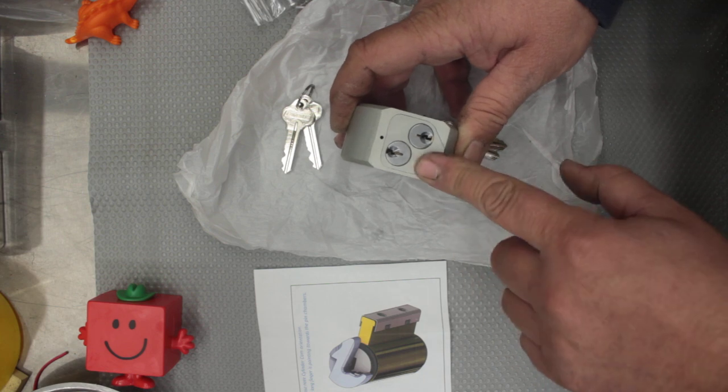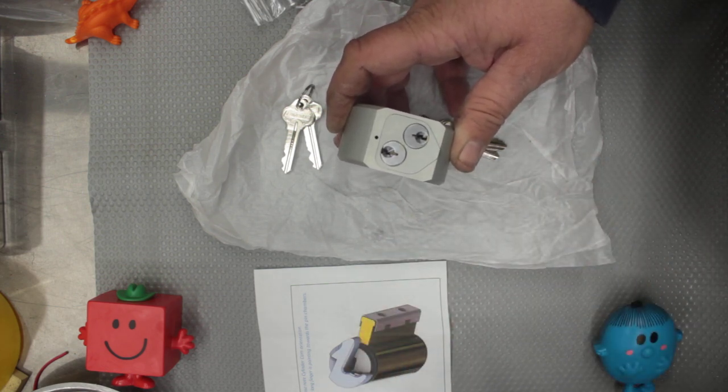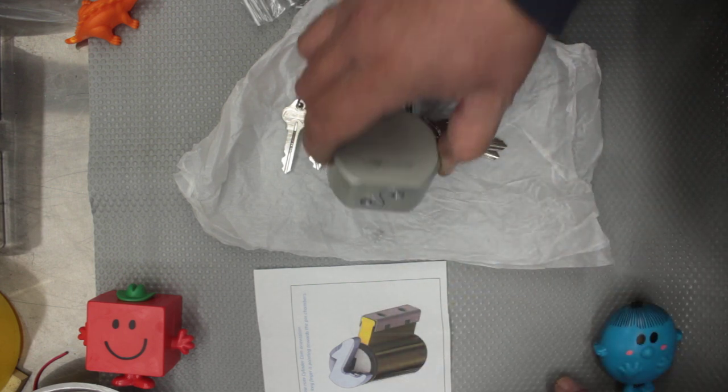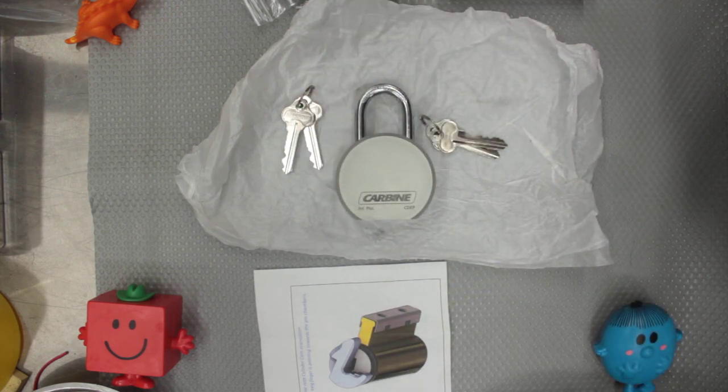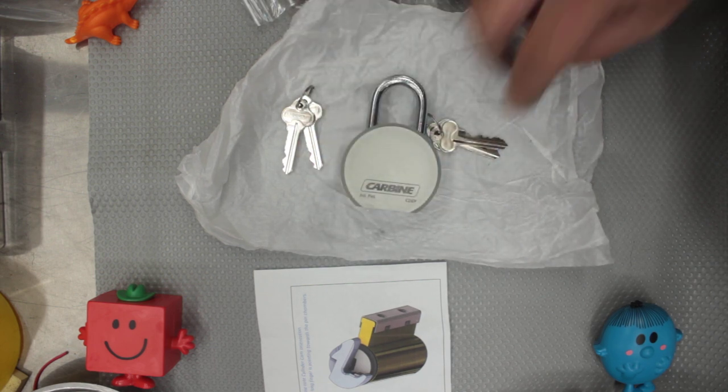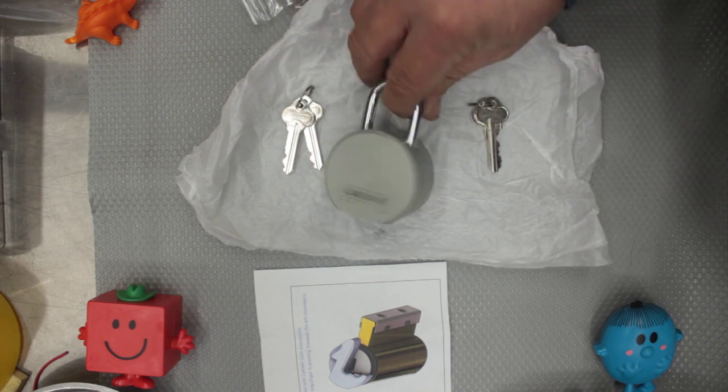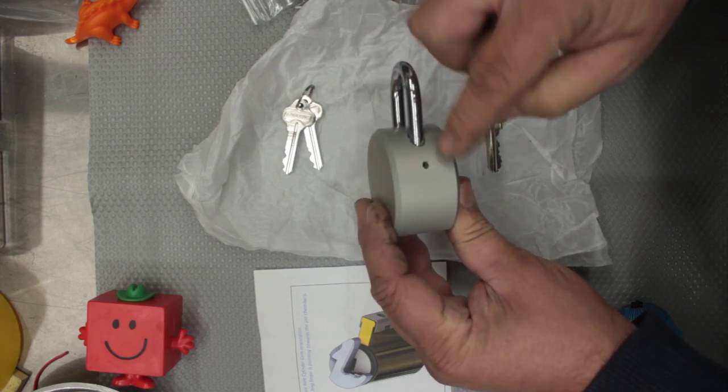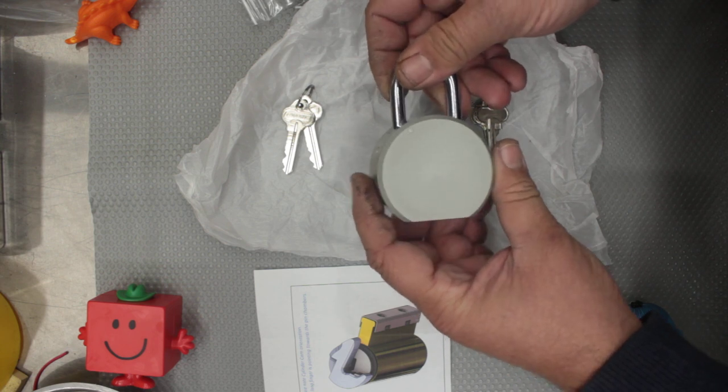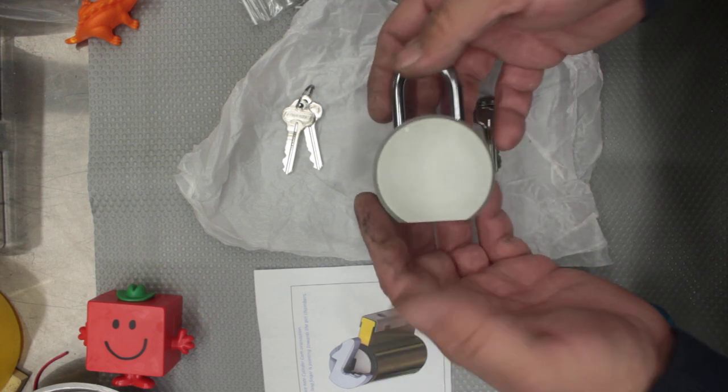If you wanted to give the lawnmower guy or the bin guy just a key just for that, you could do that. Rather than giving away a key that works everything else, you could just give them access to this one padlock. That's just a small example. Dual key padlock.